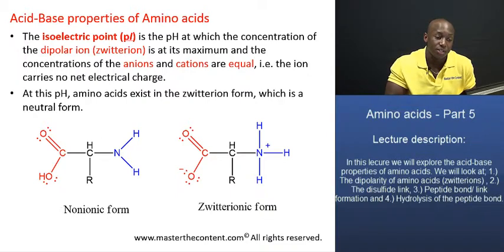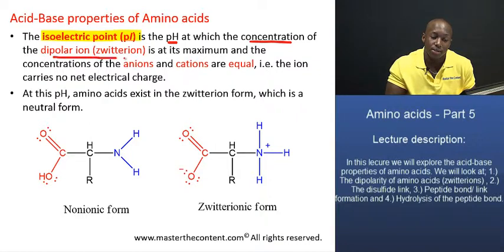There's actually a pretty good definition of it on the screen right there. The isoelectric point is basically the pH at which the concentration of the dipolar ion, the zwitterion, is maximum, is at its maximum, and the concentrations of anions and cations are equal.